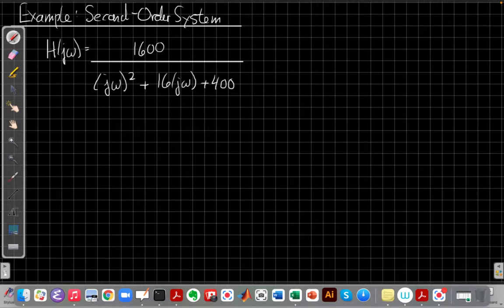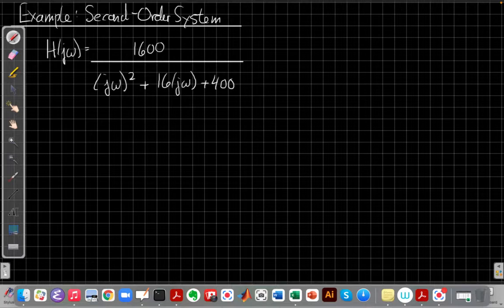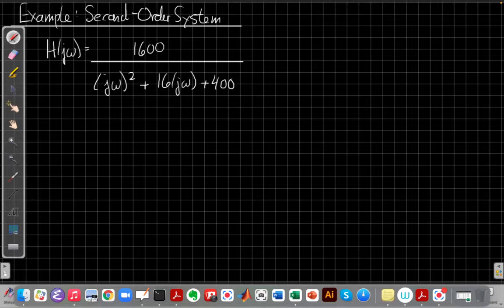Okay, so for today's example, I'm going to look at a particular second-order system, where imagine H(jω) is 1600 divided by (jω)² + 16jω + 400.